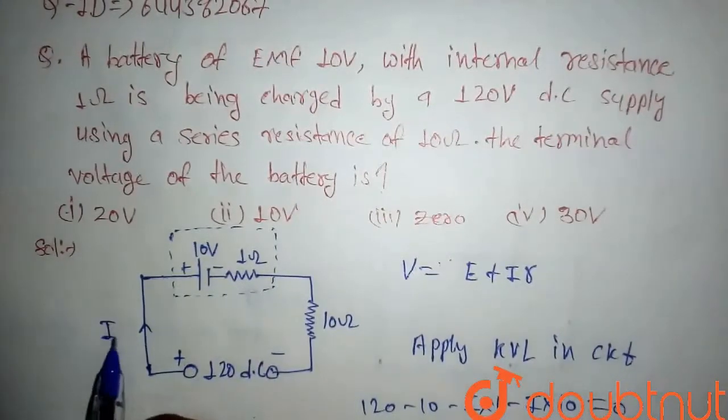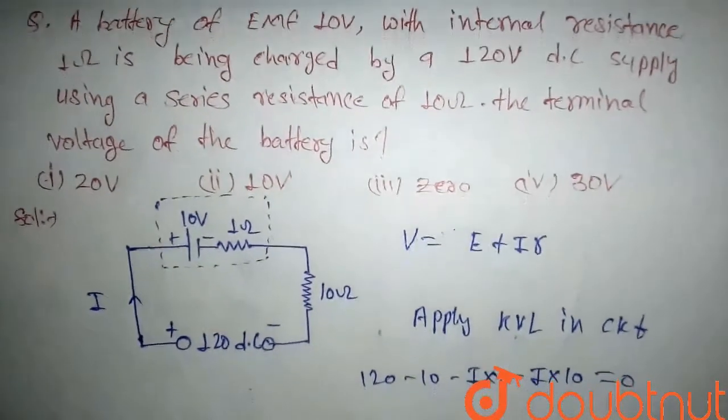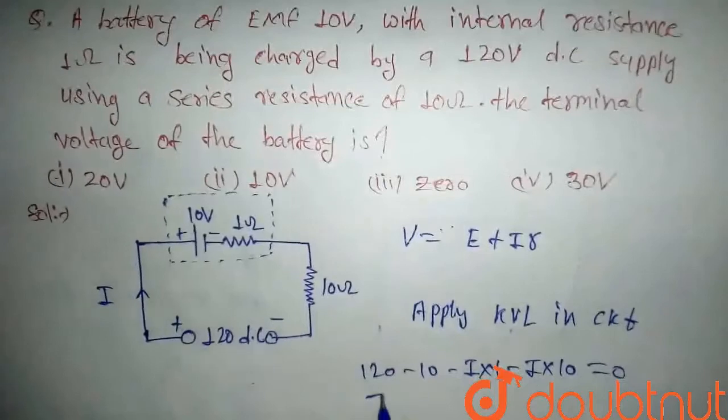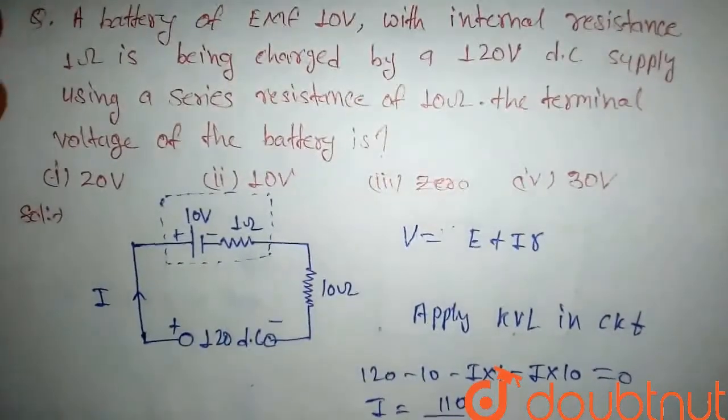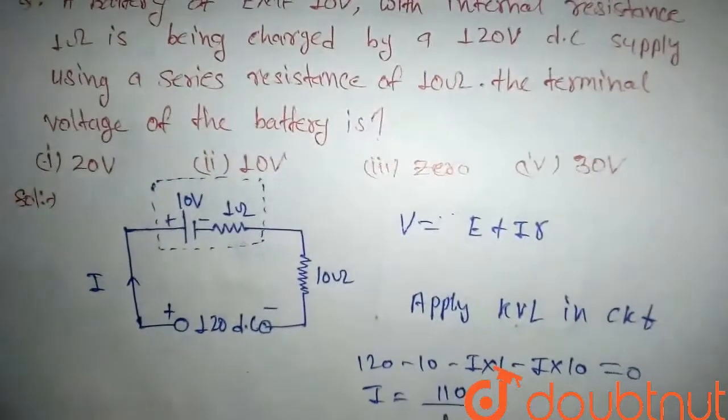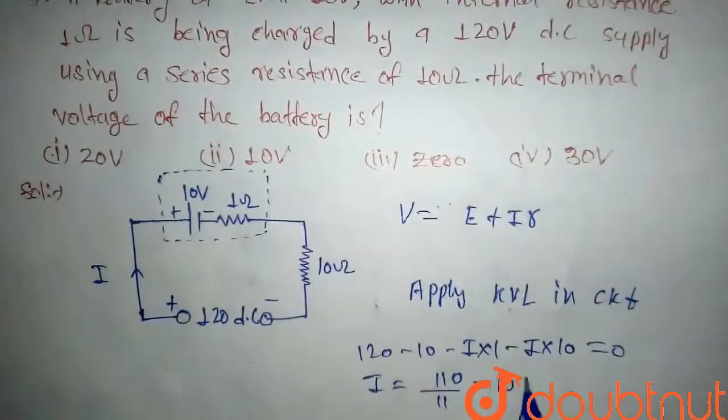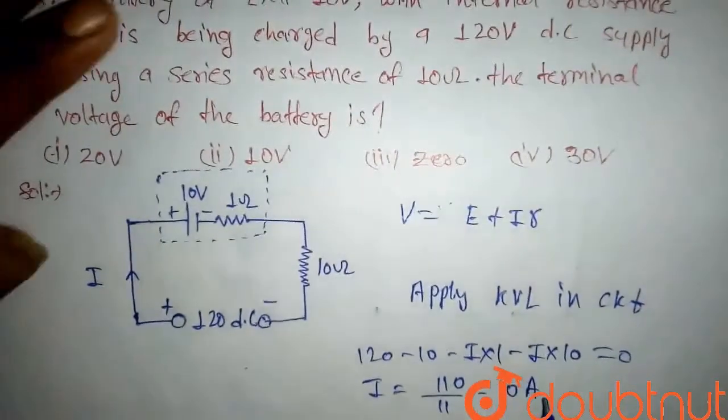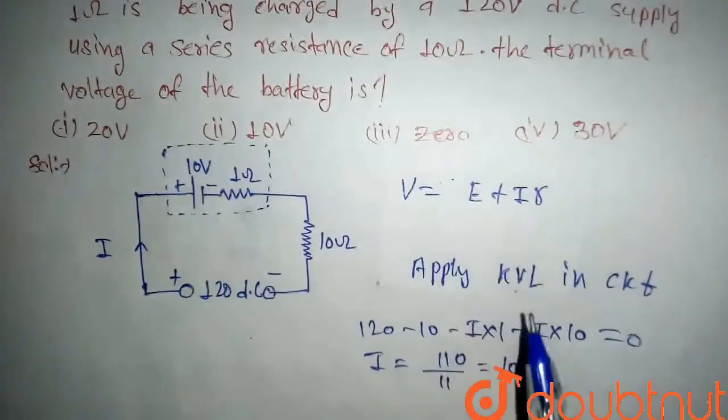Assume that the current flowing through this is I. So if you solve, you will get I equals 110 upon 11. Here current comes out to be 10 ampere. So after solving it, if you put here, then we will get terminal voltage.